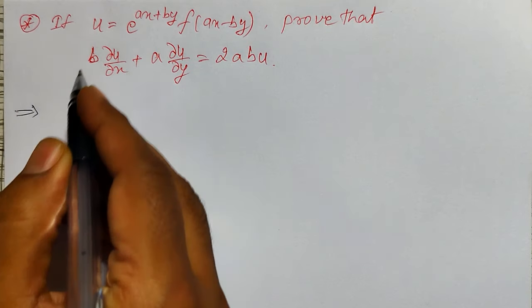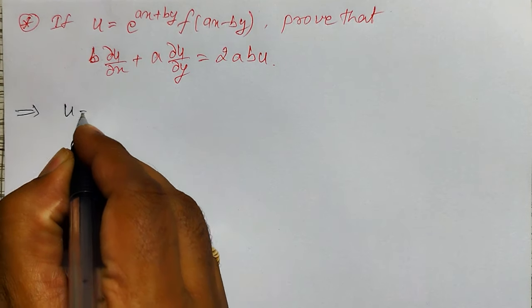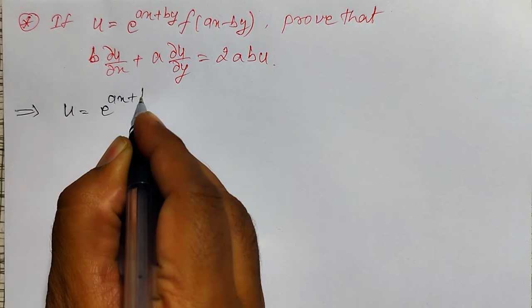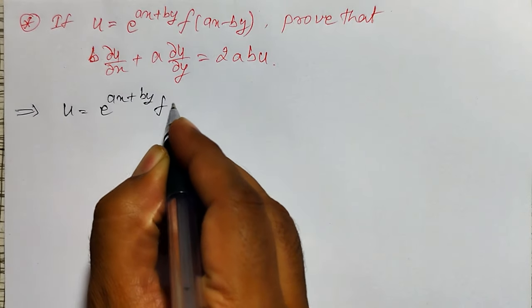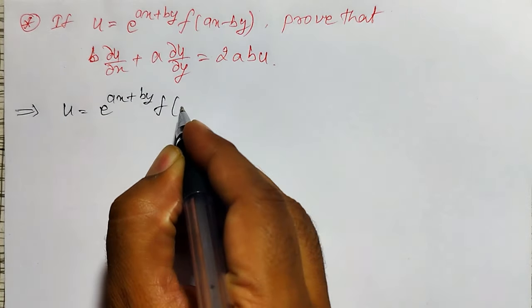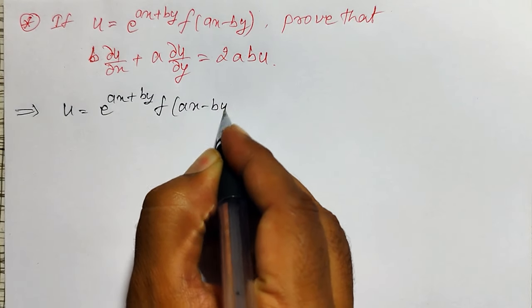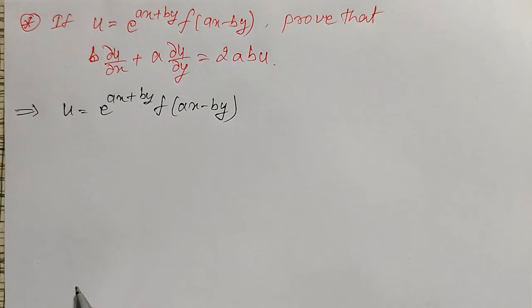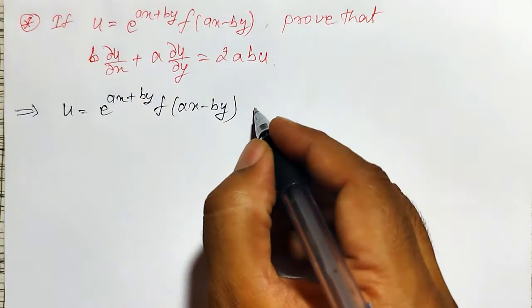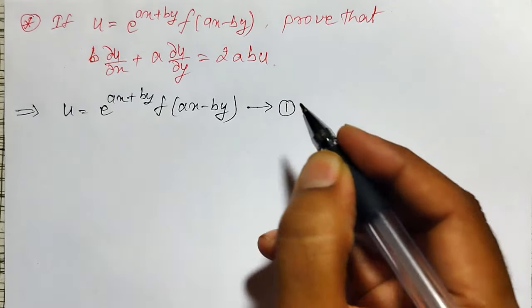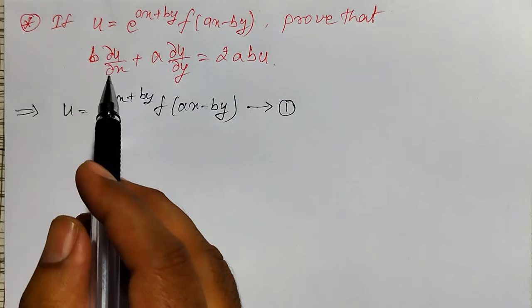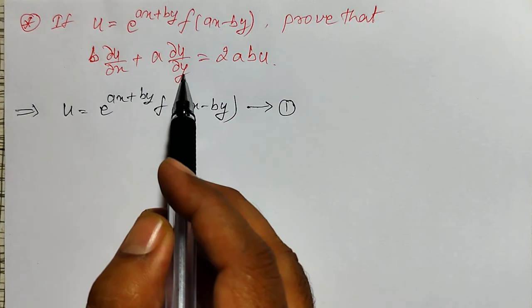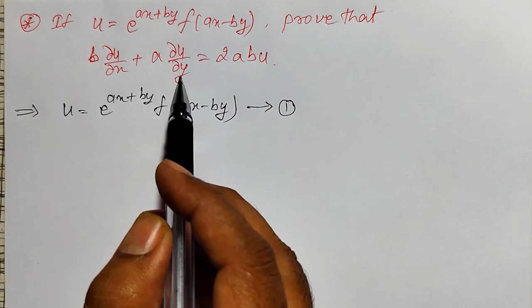Here the given function is u equal to e to the power ax plus by, and it is f of ax minus by — a function of ax minus by. Let me call this as equation number one. And here I have to find out the partial derivative of u with respect to x and partial derivative of u with respect to y.